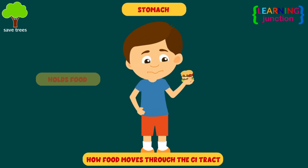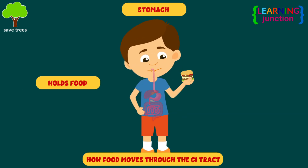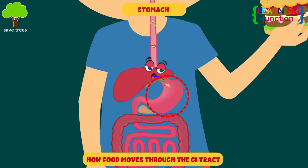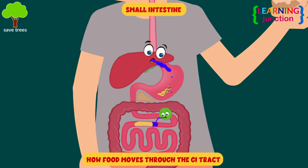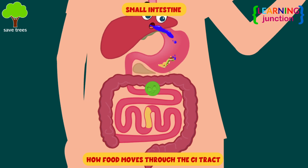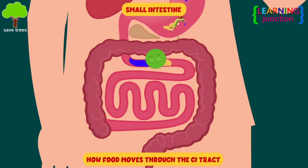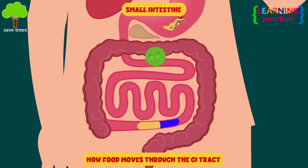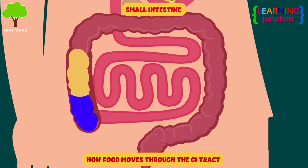Stomach — it holds food until it is ready to empty into your small intestine. Small intestine — food mixes with the digestive juices from your intestine, liver, and pancreas. Your intestinal walls absorb nutrients and water from food and send waste products to the large intestine.